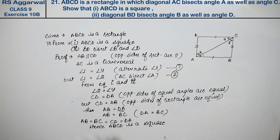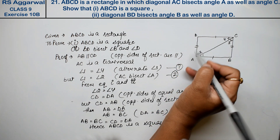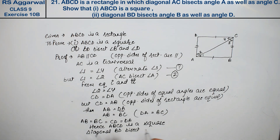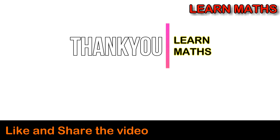अब ABCD square हो गया, तो हमें पता है square की diagonals opposite angles bisect करती हैं. So, we can say that diagonal BD bisects angle B and angle D — proved. Thank you! If you understand the step-by-step solution of this video, please subscribe my channel on Maths and share it with your friends.